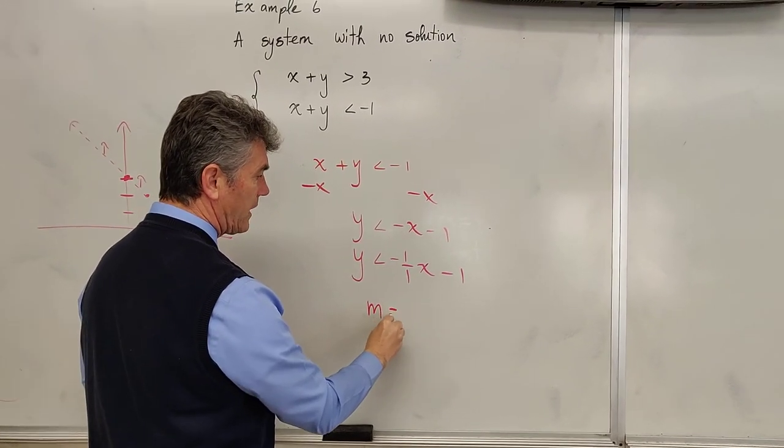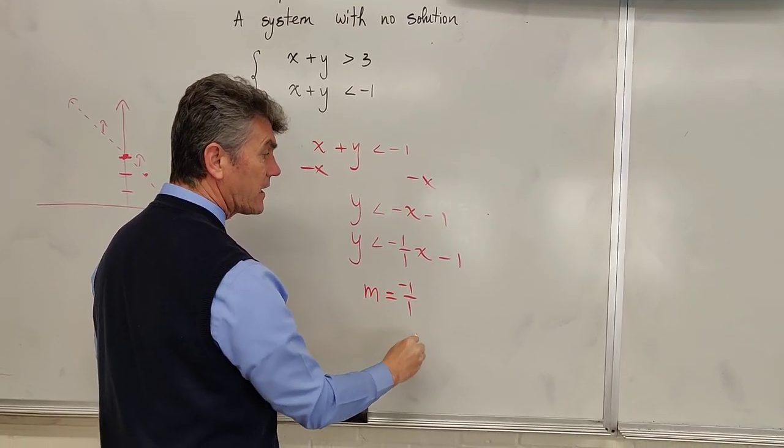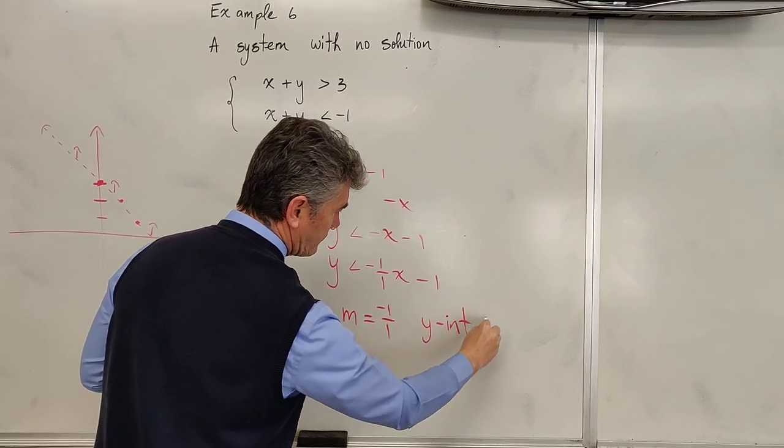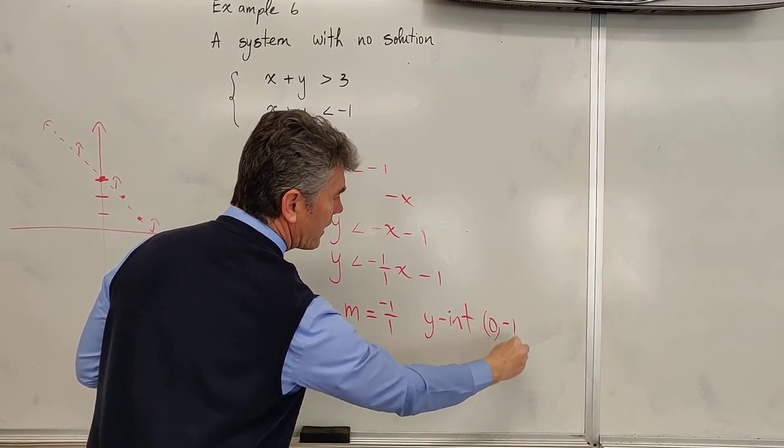So still negative 1 over 1, just like the last line. Y intercept is 0 comma negative 1.